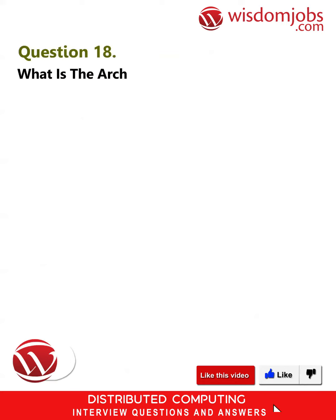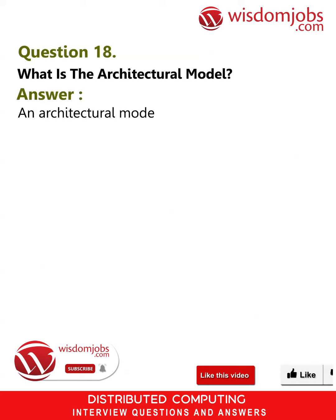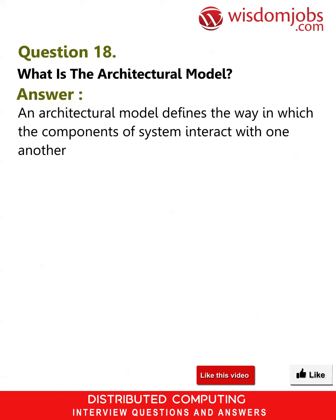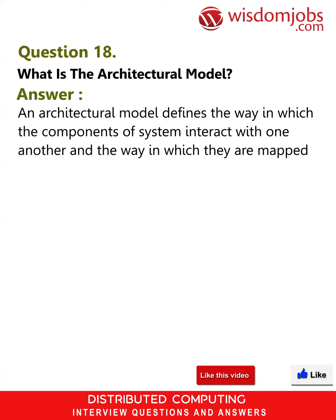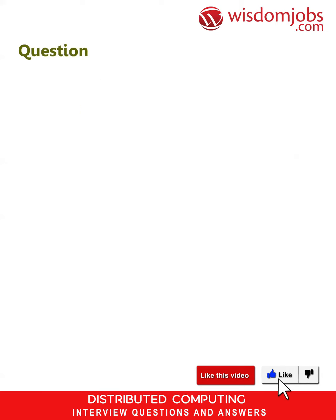Question 18: What is the architectural model? Answer: An architectural model defines the way in which the components of a system interact with one another and the way in which they are mapped onto an underlying network of computers.